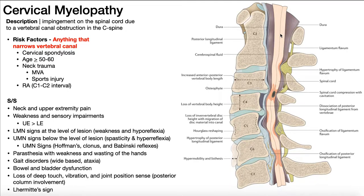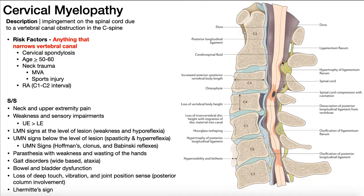A cervical myelopathy occurs any time there's a compression by any structure onto the spinal cord. We can see several structures within here that can cause that compression or impingement. The first one is the ligamentum flavum — that's all what this yellow stuff is here, posteriorly. Sometimes you can have hypertrophy of that ligamentum flavum. Normally it should be a thinner structure, but you can see it's really fat there — that's hypertrophy. It could even hypertrophy and ossify, and in both cases it's taking up more space than it ought to, producing compression on the spinal cord.